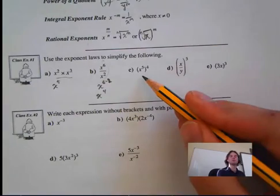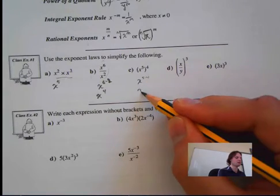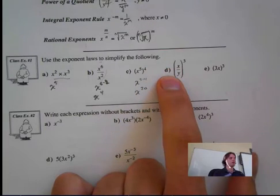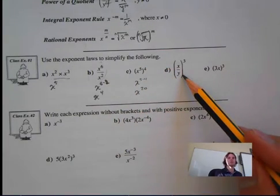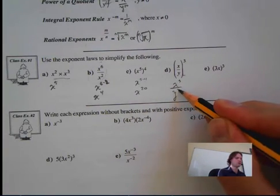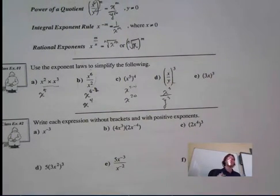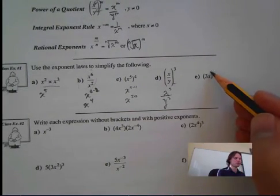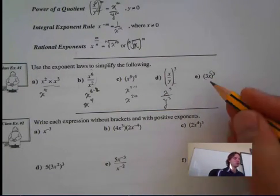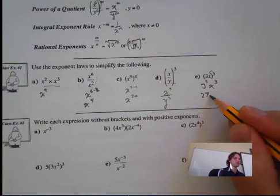This next one is power to a power: x to the 5 multiplied by 4, which is x to the 20. And this one here is the power of a quotient: x to the 3 all over y to the 3. And the last one is power of a product — a lot of people make a mistake here. Since the 3 is outside the bracket, both terms have to be cubed: 3 cubed times x cubed, which is 27x to the 3.